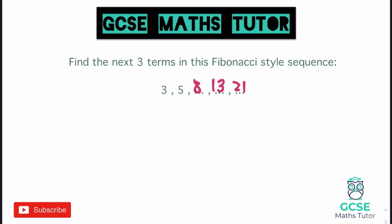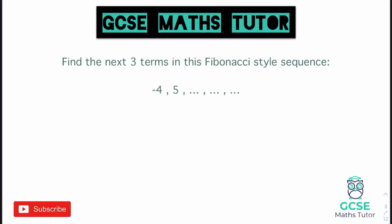This one is ever so slightly different — hopefully you can spot it starts with a negative number. That's not really going to change anything; we just need to be a little bit careful with our negatives. Negative four and five, when we add those together, only gives us one. So the next number in the sequence actually goes down — this is the only scenario where that could happen, when we involve negative numbers. From here, five plus one gives us six, and then one plus six gives us seven.